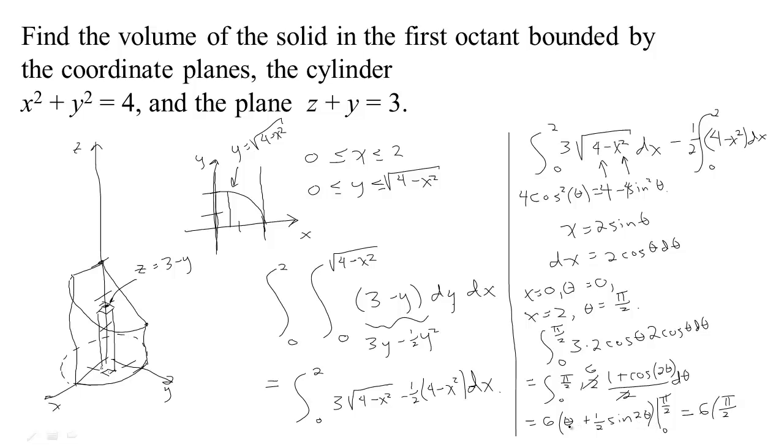And when I plug in 0, I get 0, and the sine of 0 is 0. So I just have 6 times pi-halves, or 3 pi.